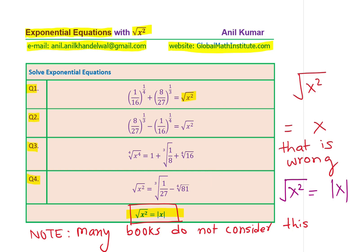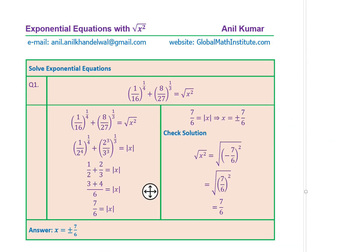With that in mind, I'd like you to pause the video, copy these questions, solve them, and then check with my solutions. Let's begin with the very first one: one over 16 to the power of one over four, plus eight over 27 to the power of one over three, is equal to the square root of x squared.